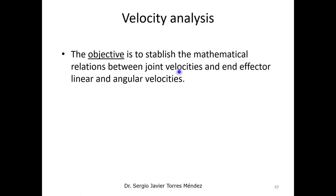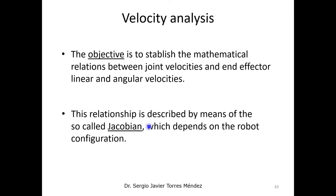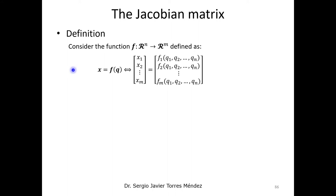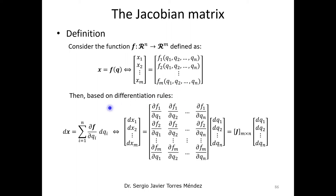The goal is to establish the mathematical relationship between the joint velocities and end-effector velocities. The mathematical tool we are going to use is the so-called Jacobian, or Jacobian matrix. That's a powerful tool that depends on the robot's configuration. Suppose that we have n independent equations that come from the forward kinematics analysis.